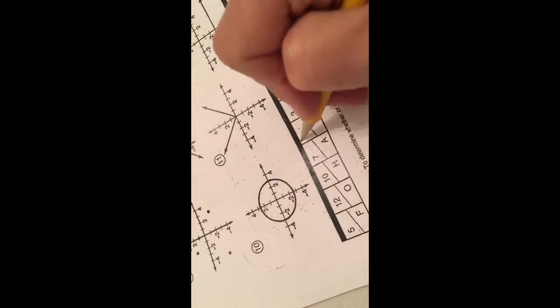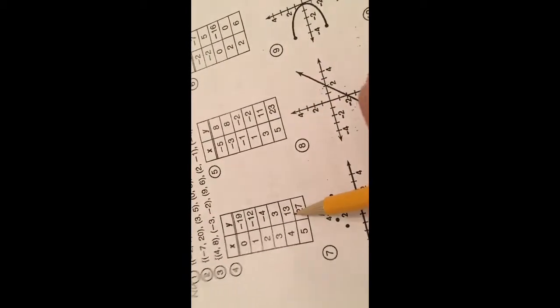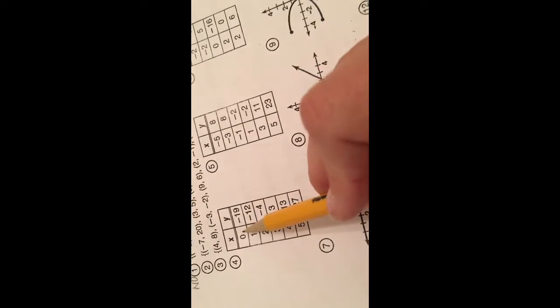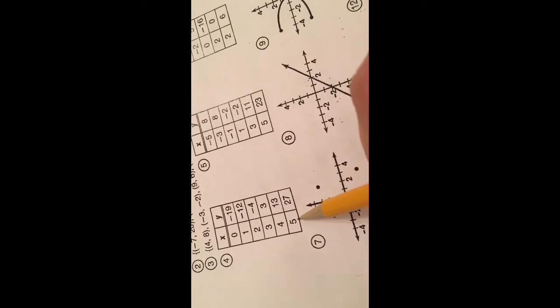We come down here to the bottom of the page where 1 is and we X out 1. Now come up here to number 4. Over here 0, 1, 2, 3, 4, 5.